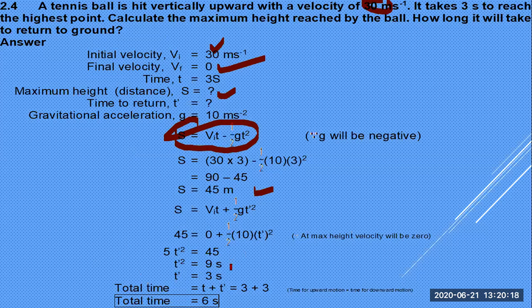The time to return is also 3 seconds — equal to time going up. Total time of flight = 6 seconds. Using S = Vit + ½at² gives the distance. You can also use Vf = Vi + at to calculate time. You have different options. First write the three equations of motion, decide which to use based on what is given and required.